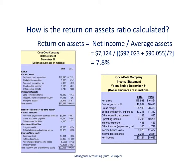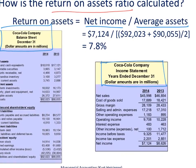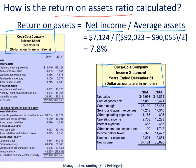Now we'll look at how to calculate the return on assets ratio. There's information from both Coca-Cola's balance sheet on the left and the income statement on the right. In the numerator we have net income, and in the denominator we have average assets. We need the income statement for net income and the balance sheet to figure out average assets. Net income for Coca-Cola is $7,124 million.